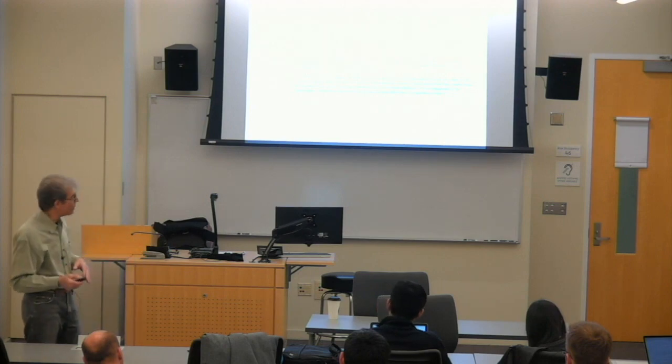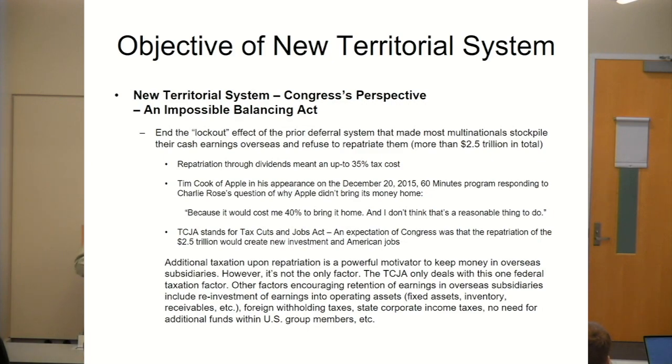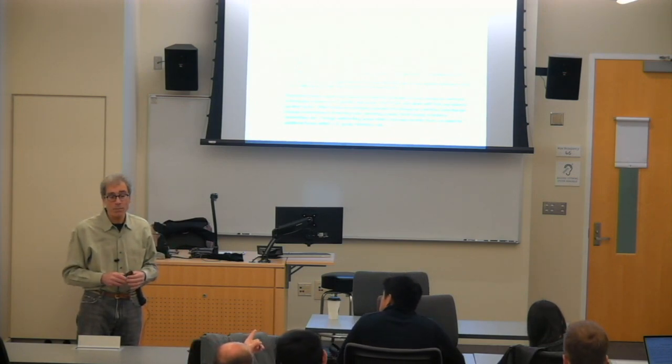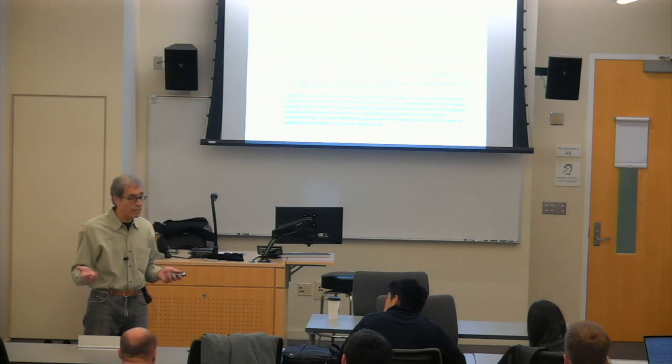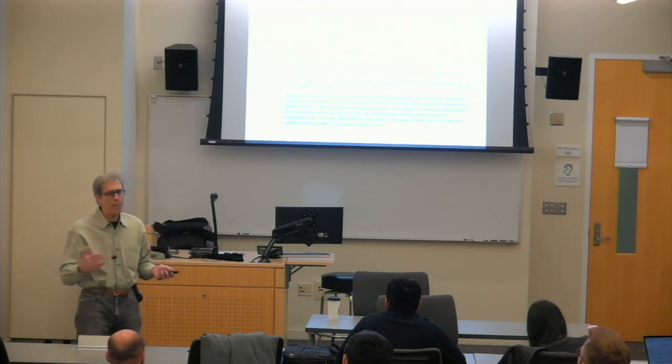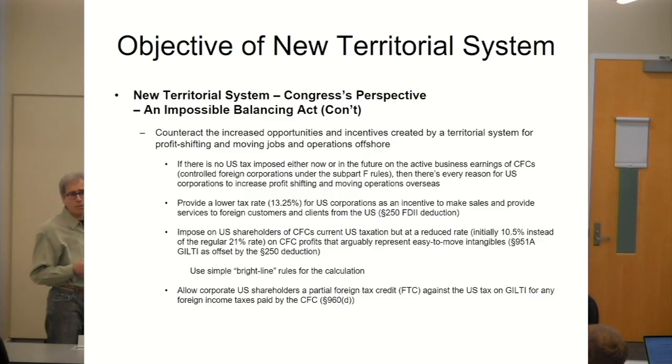Now Congress essentially ignored the second kind. They only focused on the first kind. So that's one of the pressures that Congress had. Now a second thing, you've heard me mention a number of times, that because companies, because multinationals didn't want to bring money back that would be immediately taxed at 35 percent, they stockpiled, for various companies, billions and billions of dollars, totaling several trillion dollars outside the United States.